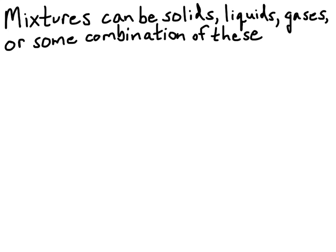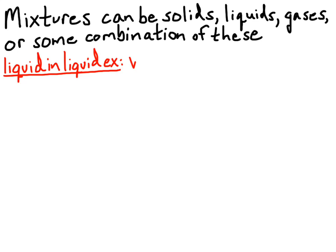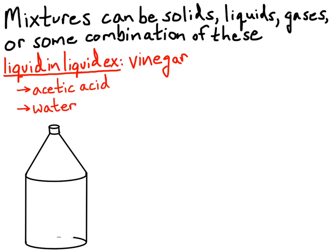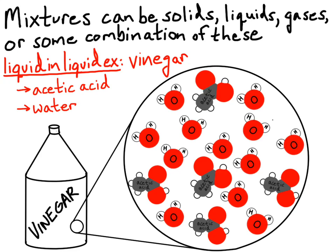Mixtures can be solids, liquids, gases, or some combination. Next we'll look at liquids mixed in liquids. Vinegar is an example: it is a mixture of acetic acid, which is a liquid, and water. If we could see the molecules that make up vinegar, we'd see the acetic acid molecules mixed together with water molecules. We have two liquids mixed together. They maintain their identity and are not chemically combining, so vinegar is a mixture.